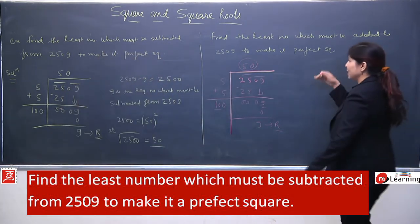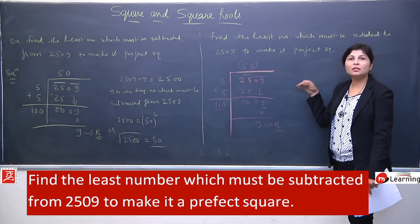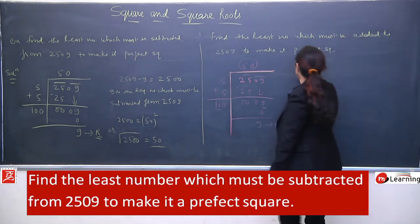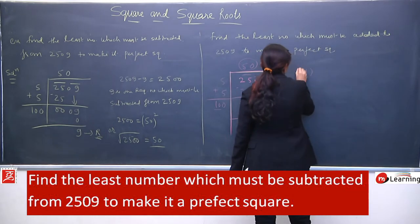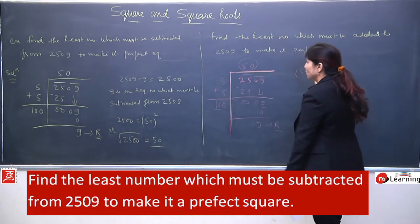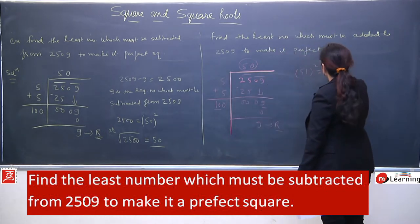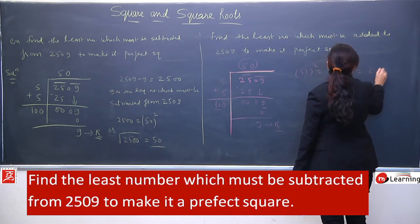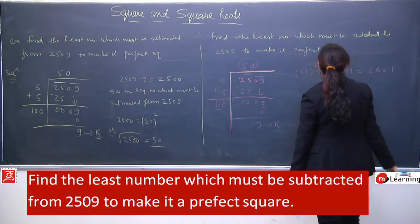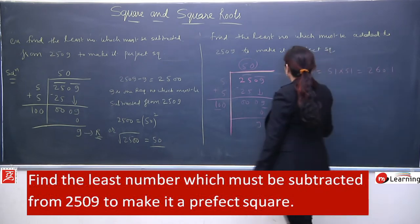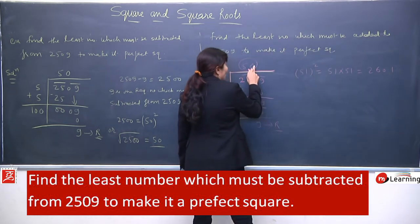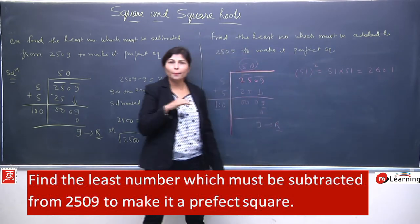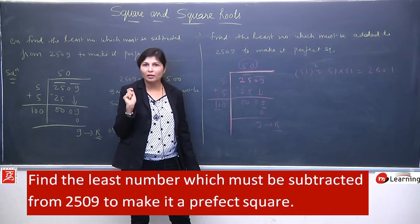Isse humein yeh clue mil gaya ki yeh 50 ke aaspaas ka number hai, 50 ke square ke paas ka number hai. So hum 50 se ek greater number, or you can say the successor of 50, which is 51. So hum kya karenge? 51 ka square find out kar lenge. 51 ka square kya hoga? 51 into 51, which is equal to 2601.